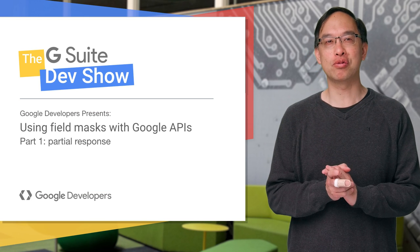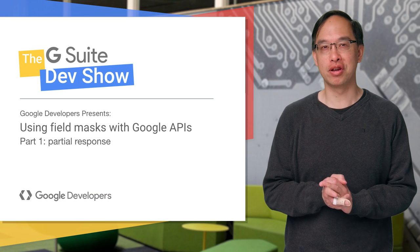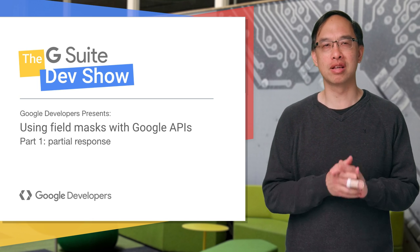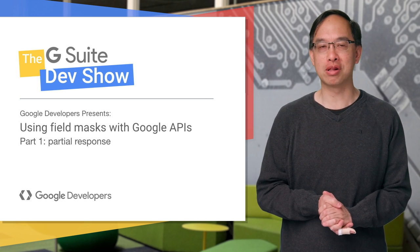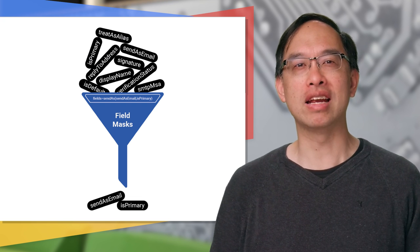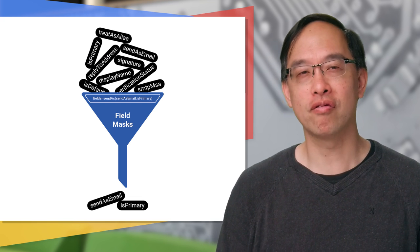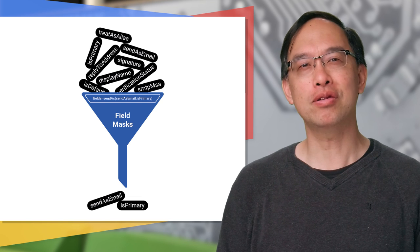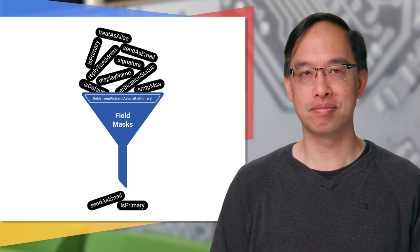While we do look at several G Suite APIs in this video, field masks are general and apply across Google APIs, from YouTube to the Google Cloud Platform. So what are field masks? They're not masks that you wear. The best way to think of them is as a filter. While they work differently when reading data from versus writing data to an API, the filter analogy is still the most appropriate.